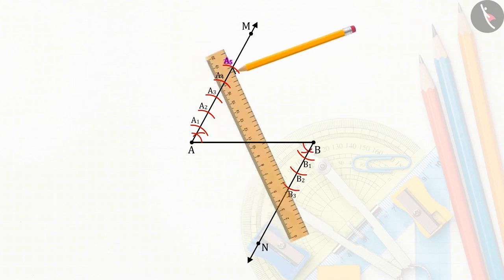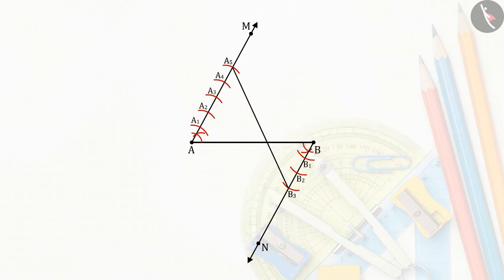Connect points A5 and B3, which gives the line A5B3, which intersects line AB at point P.